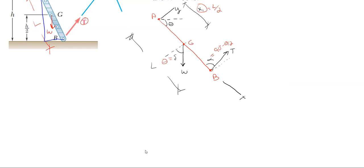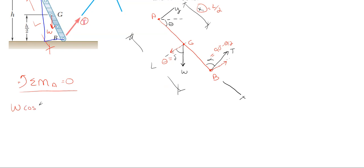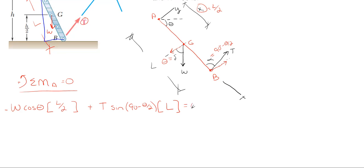Now I'm left with my original picture and original orientation of my axis. Summing moments about point A to get T: we have the component of W parallel to y, which is W times cosine of delta (cosine of theta), times the distance L over 2 — this rotates clockwise about A, so it's negative. Then T times the sine of alpha, which is sine of (90 minus theta over 2), times the full ladder length L, rotating counterclockwise — so plus T times sine(90 minus theta/2) times L. All of that equals zero.